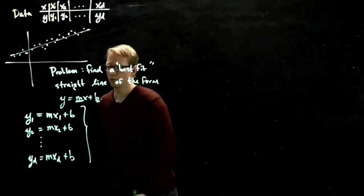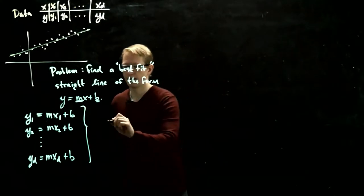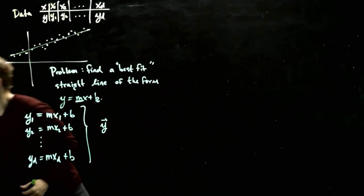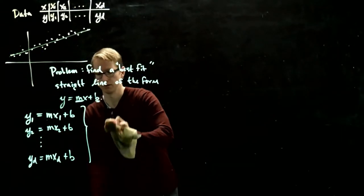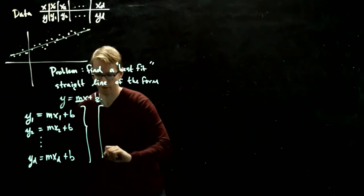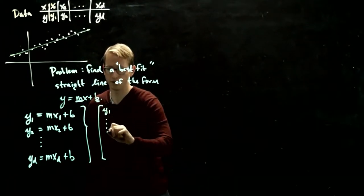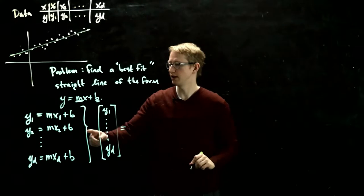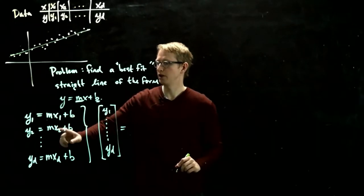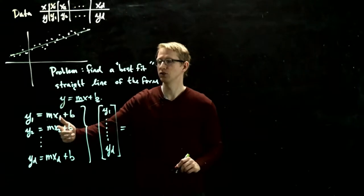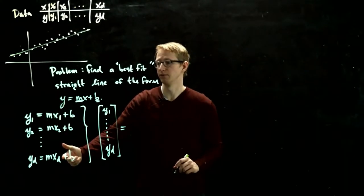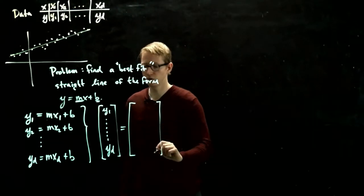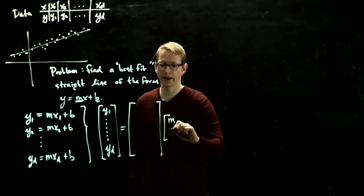We can rewrite this problem as a matrix equation by saying that we have the vector y, which is the vector of our data points. In fact, let me even write y as a column vector. So let's write it like y1 all the way to yd. And if we notice this, our coefficients are always being added in a linear fashion, and the only thing that's changing is the value of x1.